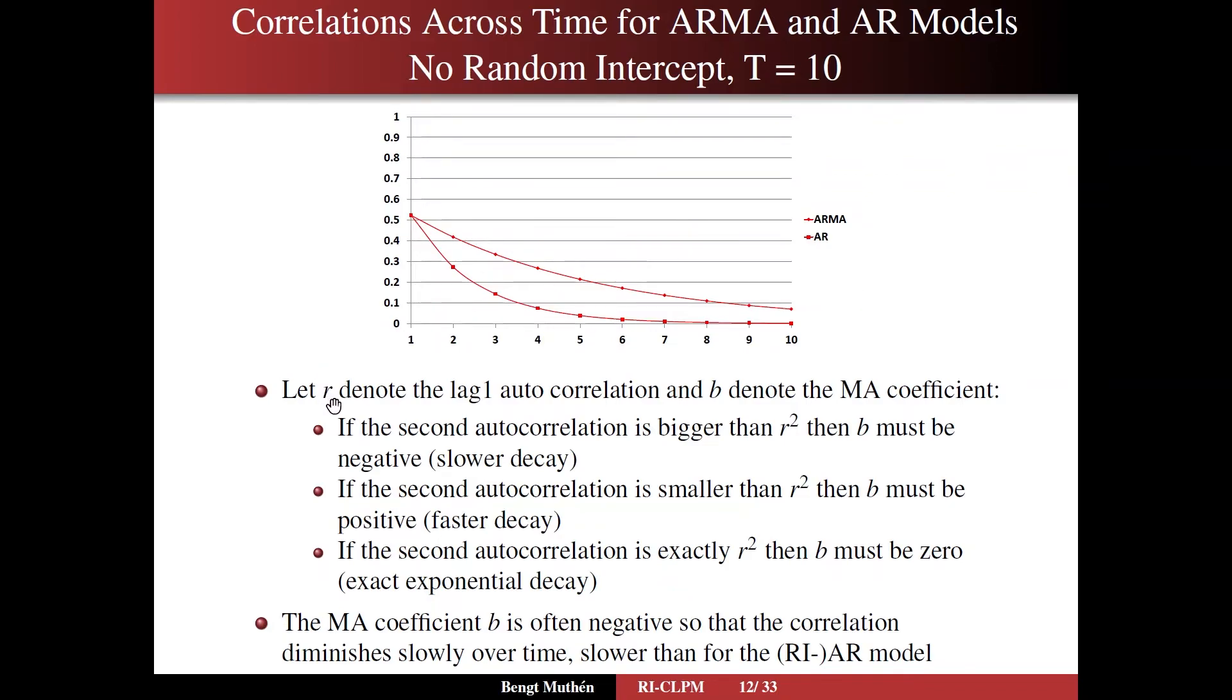So if you let R denote the lag 1 autocorrelation and B the MA coefficient, that is the coefficient for a residual at the previous time point influencing the outcome at the next time point. If the second autocorrelation is bigger than R squared, then MB must be negative. And that's a picture we have here, negative, slower decay. If the second-order correlation is smaller than R squared, which is the AR value, then B must be positive, faster decay. So that can happen as well, but in my experience it's more seldom seen.